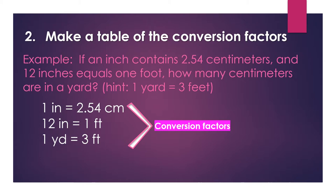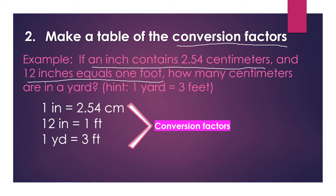Step two: make a table of the conversion factors. Those are the facts we extracted from the word problem. So we have 1 inch equals 2.54 centimeters, 12 inches equals 1 foot, and 1 yard equals 3 feet written down in our conversion factor table. We place the question mark equation at the top, above all the conversion factors.